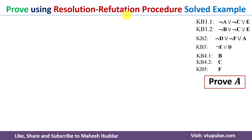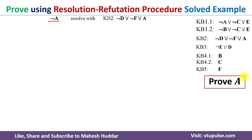In the resolution refutation procedure, we take the negation of what we need to prove. In this case, I want to prove A, so I will take the negation of A. My intention is to derive the empty set — if I get the empty set, it means whatever we assumed is wrong, and therefore A is actually true. So I have considered the negation of the conclusion, which is negation of A. To remove it, we can use knowledge base 2, because it contains A, and this A and negation of A will cancel out.